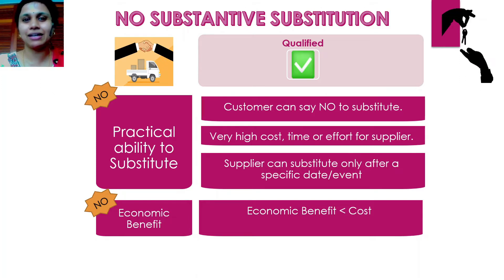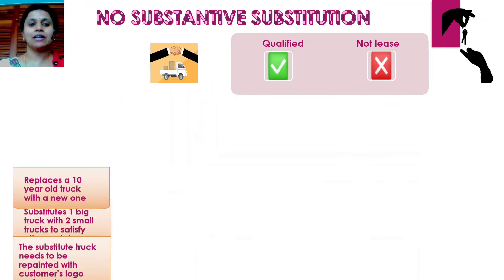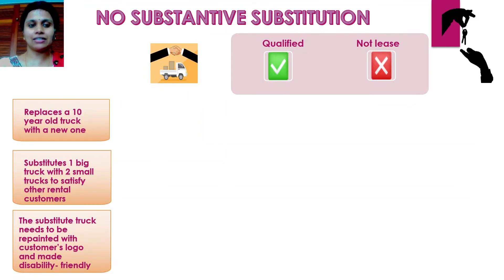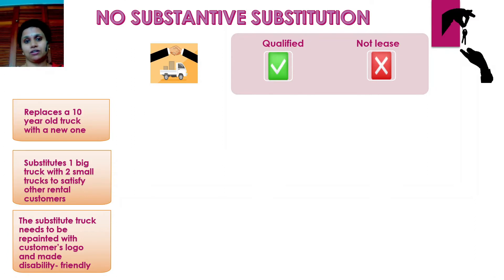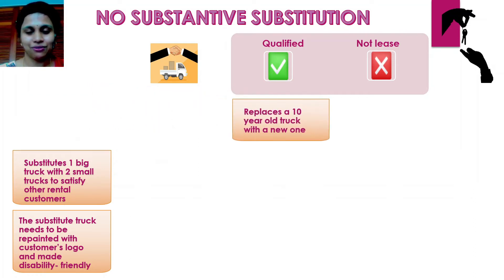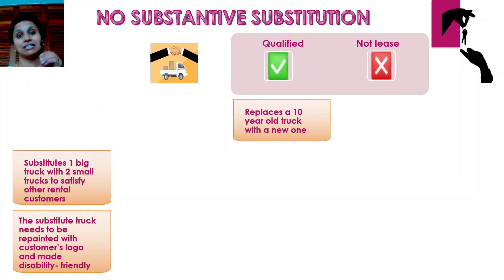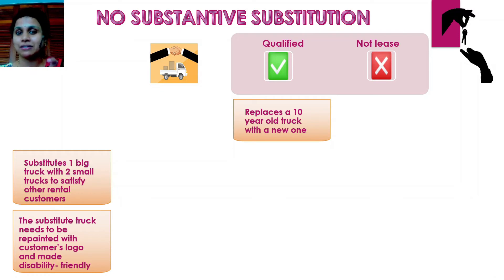When will we say a supplier does not have the practical ability to substitute? First, if the customer can say no to any substitution suggested. Second, if it is too much time, effort, and cost to substitute the asset. Third, if the contract states the supplier can substitute only if a specific event occurs. Regarding economic benefit: if the economic benefit from substitution is far less than the cost involved, then we will say the supplier gets no economic benefit. For example, if the supplier replaces a 10-year-old truck with a new one, he has no substantive substitution rights because he is substituting the asset only due to its age — the occurrence of a specific event. Therefore, this asset qualifies under the lease.